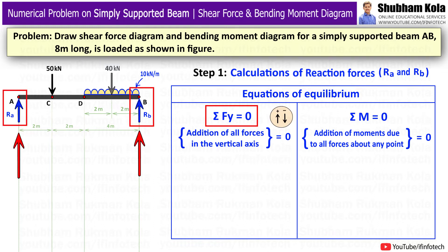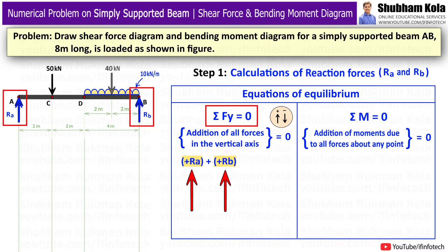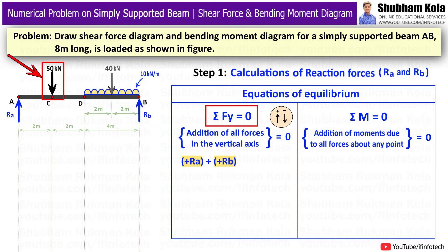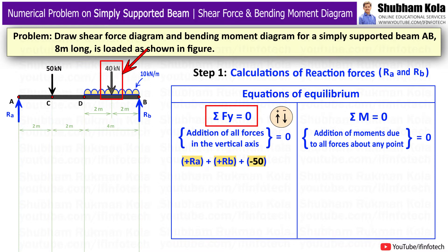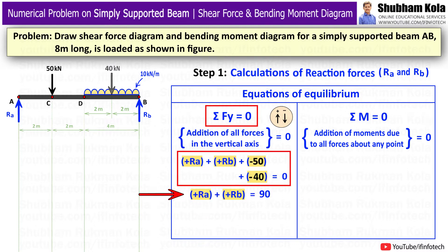Ra and Rb are vertical reaction forces acting upward, so I add them with positive sign. The point load of 50 kN acts downward, so I add it with negative sign. The converted point load of 40 kN also acts downward, so I add it with negative sign as well. After calculating, I get the equation Ra plus Rb equal to 90 kN — equation number 1.